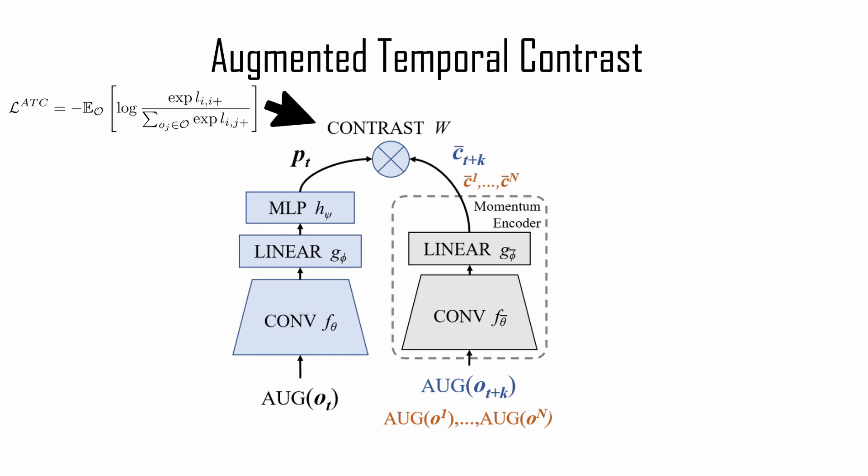Then, they use the InfoNCE loss on the latent images, where the negative examples are the positive elements for the other anchors in the training batch.